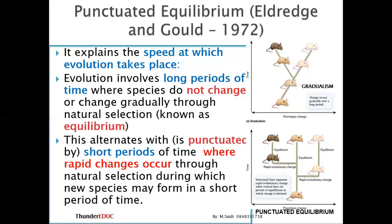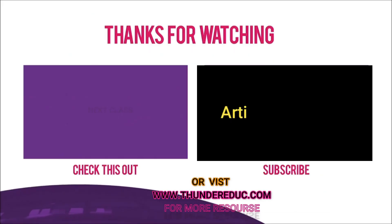Basically, in gradualism, organisms take a long period of time before they change, while punctuated equilibrium involves a long period of no change followed by rapid change. For example, you might be asked: explain how the tiger came up with stripes using gradualism or using punctuated equilibrium. For punctuated equilibrium, you would say the spots became bigger and then became stripes within a short period of time — a rapid change. For gradualism, you would explain that it took a long period of time before these tigers came up with stripes.